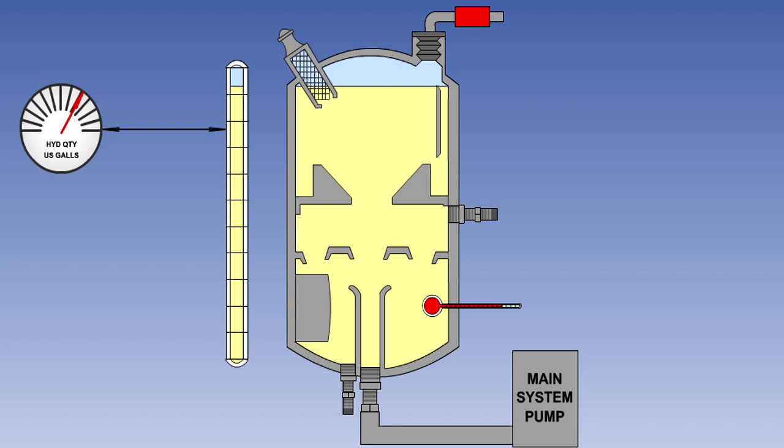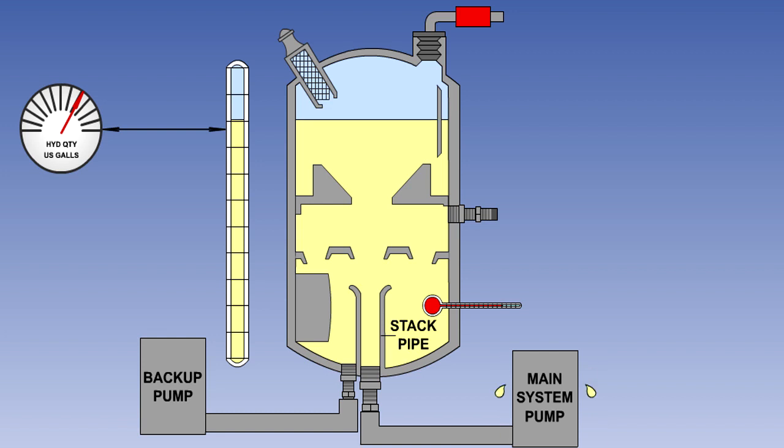In systems which are fitted with more than one pump, usually the main pump is engine-driven, whilst the backup may be electrically or pneumatically driven, or may even be a hand pump. The main pump will draw its fluid through a stack pipe in the reservoir, whilst the backup will collect its fluid from the bottom of the reservoir. This ensures that if fluid is lost from that part of the system supplying the main pump, or supplied solely by the main pump, a reserve of fluid for the backup pump will still be available.